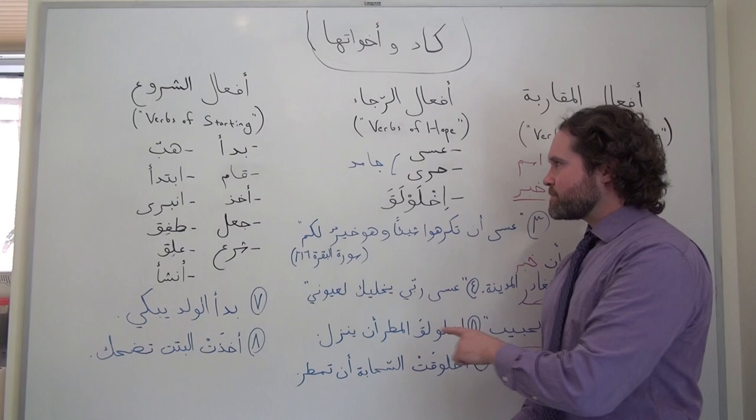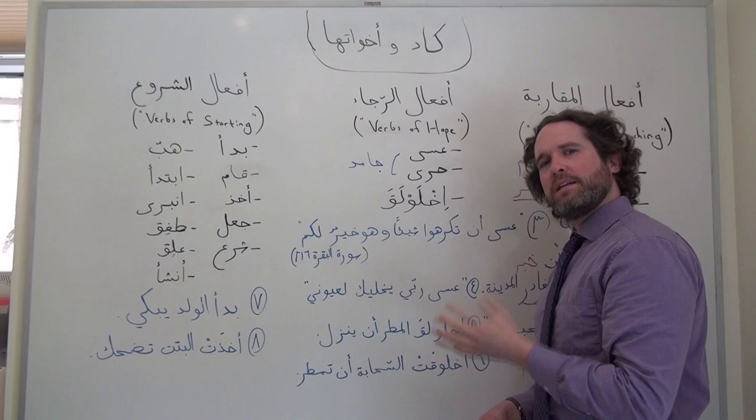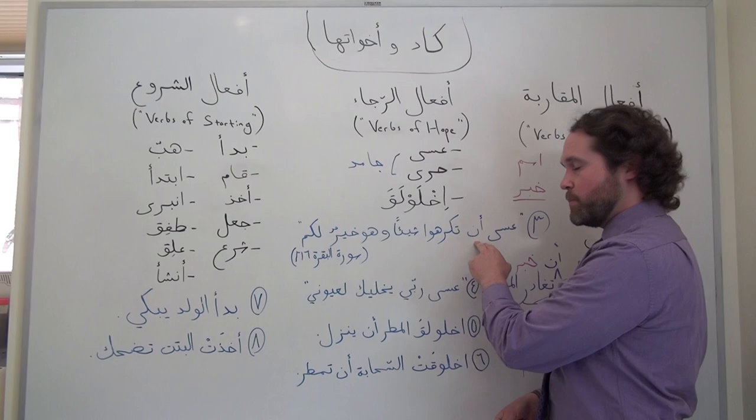With أفعال الرجاء, we typically have أن after حرى and إخْلَوْلَقَ. عسى can have أن or it can skip أن, as in the more colloquial psalm example or the very formal Qur'anic example.